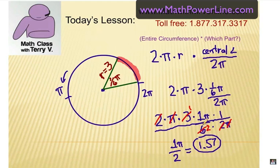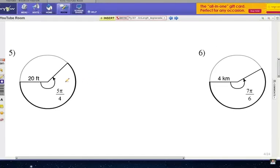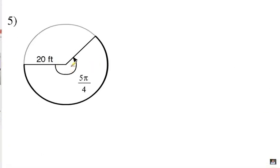Alright, now I want you to take a look at a couple of examples that will work together. Alright, number 5. We have a radius of 20. And the central angle here for the dark arc that I'm looking for is 5π over 4. 5 fourths π, in other words.